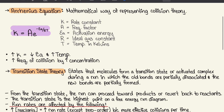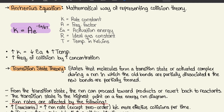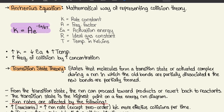Moving forward to the Arrhenius equation — it's a mathematical way to represent collision theory. We have K equals A times e to the power of negative EA over RT. K is the rate constant, A is the frequency factor, EA is the activation energy, R is the ideal gas constant, and T is the temperature in Kelvins. One thing to keep in mind: as you increase K, you decrease EA and increase the temperature — so know the relationship between the different components.